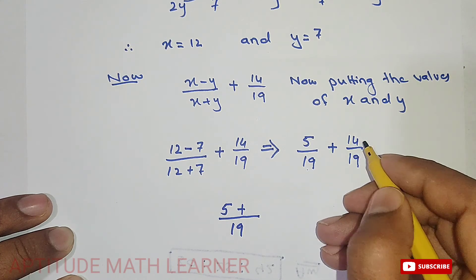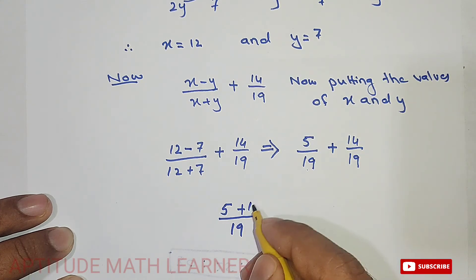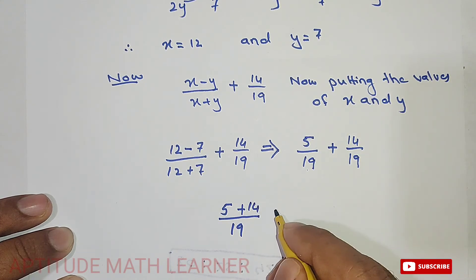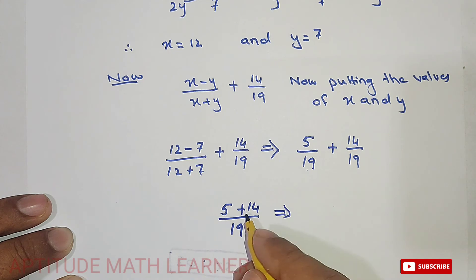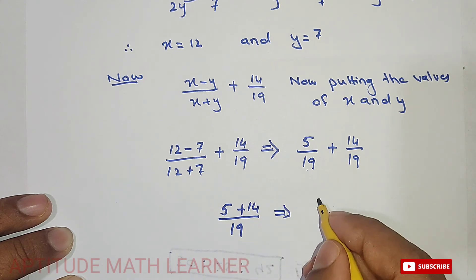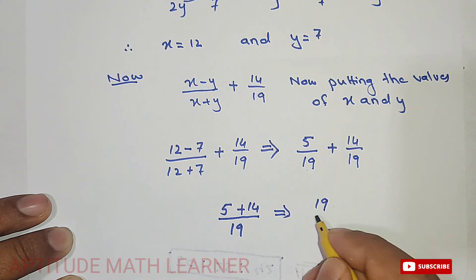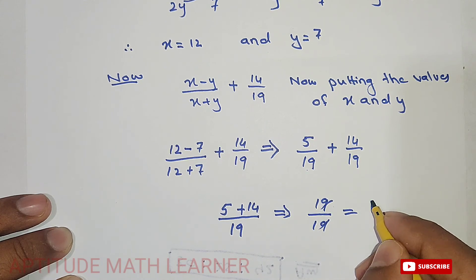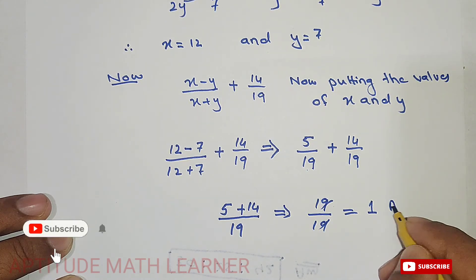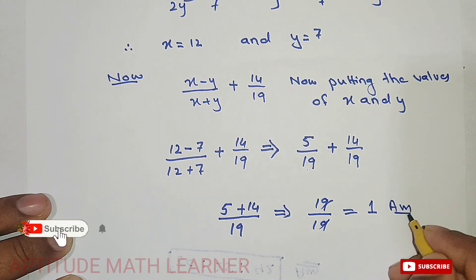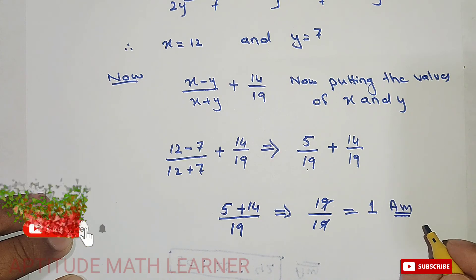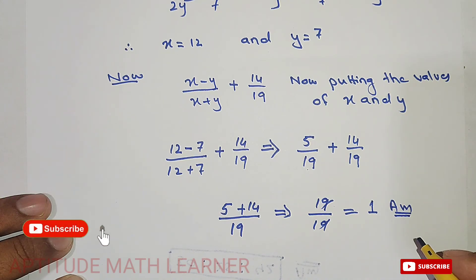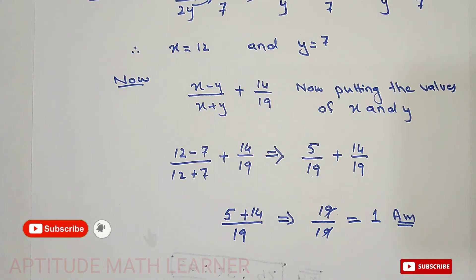We get 5 plus 14 that is 19 upon 19. The 19s cancel out and we get the answer that is 1. I hope you have completely understood. Thank you very much.